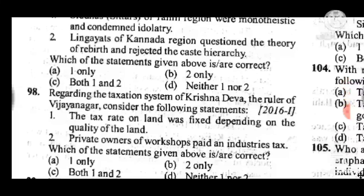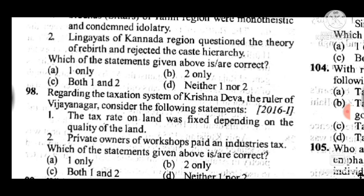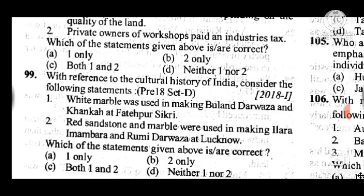Question 98: Regarding the taxation system of Krishnadeva Raya, the ruler of Vijayanagara — answer is C, both first and second are correct: the tax rate on land was fixed depending on the quality of land; and private owners of workshops paid and industries were taxed. Question 99: With reference to cultural history of India — answer is D, neither first nor second statements are correctly related to cultural history.